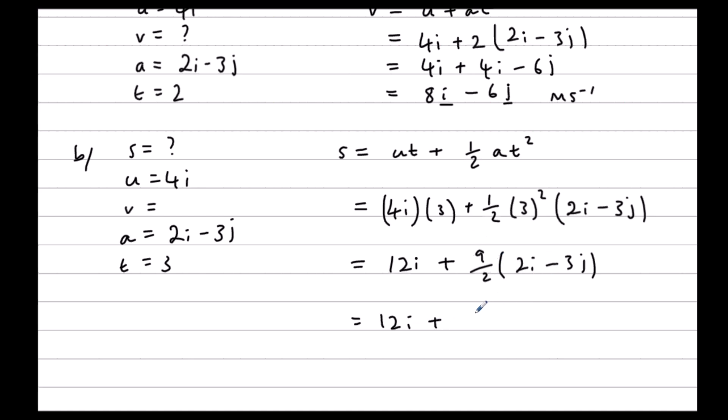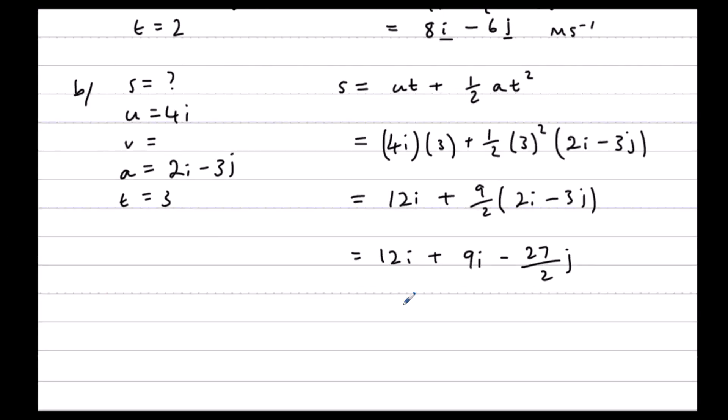9 over 2 times 2 is 9. So 9i and 9 over 2 times negative 3 is negative 27 over 2. So we have 21i minus 27 over 2j.